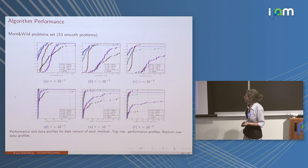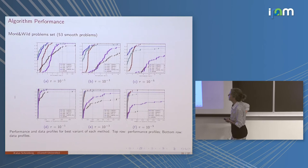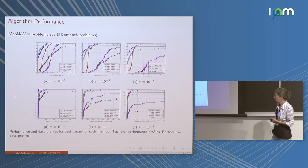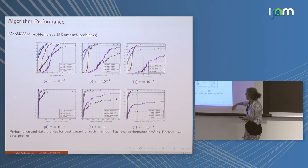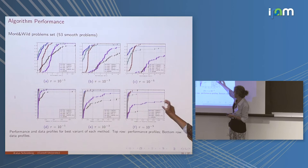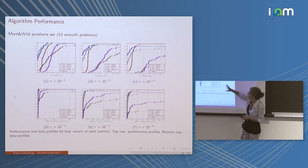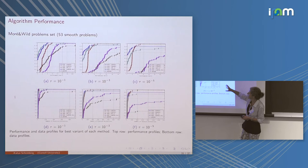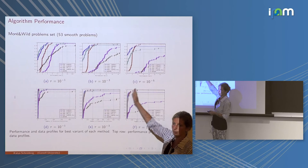Comparing algorithms on the Moré-Wildé benchmark set for derivative-free optimization with different noisy problems: the trust region method doing one sample at a time performs quite well; interpolation methods sampling multiple points also do well and are more stable. Algorithms based on Gaussian smoothing don't perform as well. On performance profiles, algorithms that go up faster and reach the top are better.